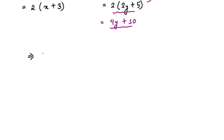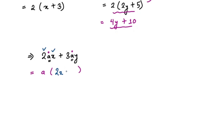Now let's look at a different type of question. Say we have 2ax plus 3ay. Here, 2 and 3 don't have any common factors other than 1, and we don't take 1 as common. So we are not going to take common from the numbers. When you look at the variables, you see that 'a' is common on both sides, so we take 'a' as common. The remaining terms in the bracket are 2x and 3y, giving us a(2x + 3y).